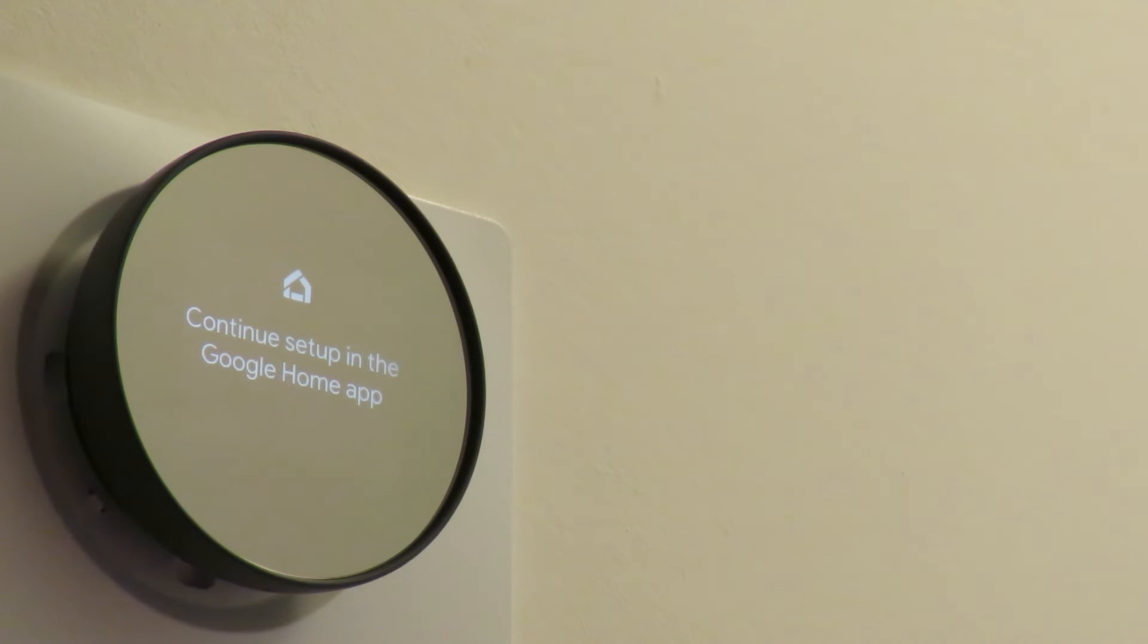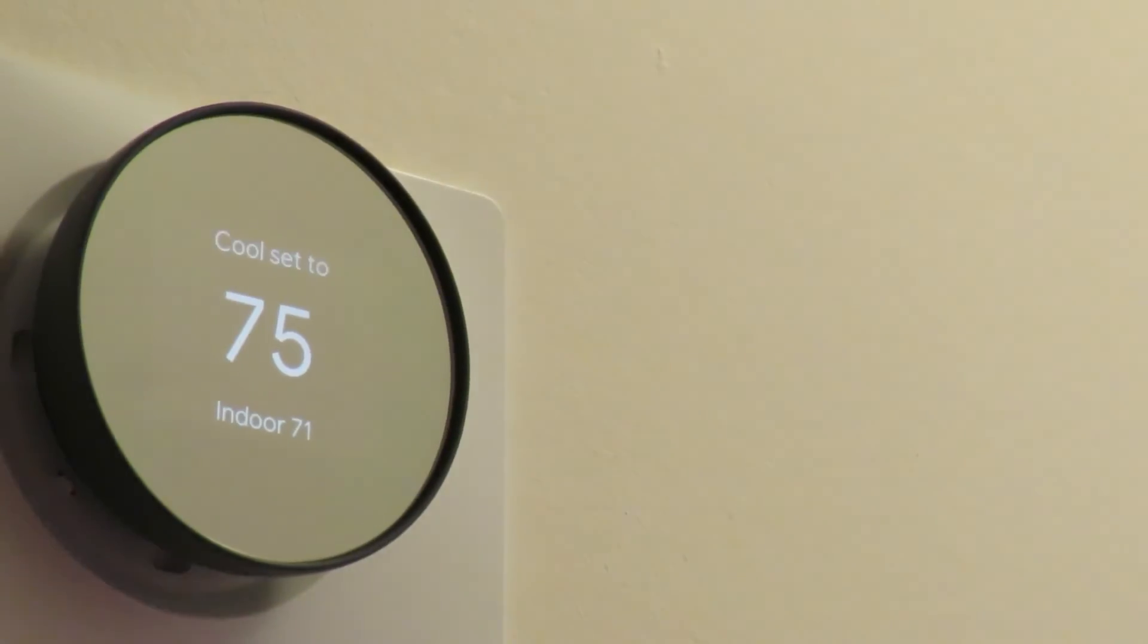Choose which mode your thermostat is in. So I'm going to select cooling. Heating is the default. Now I click next in the home app, and I'm asked to connect my Wi-Fi to the nest, and I do that through the home app. Once I do that, updates are being downloaded into the new nest.